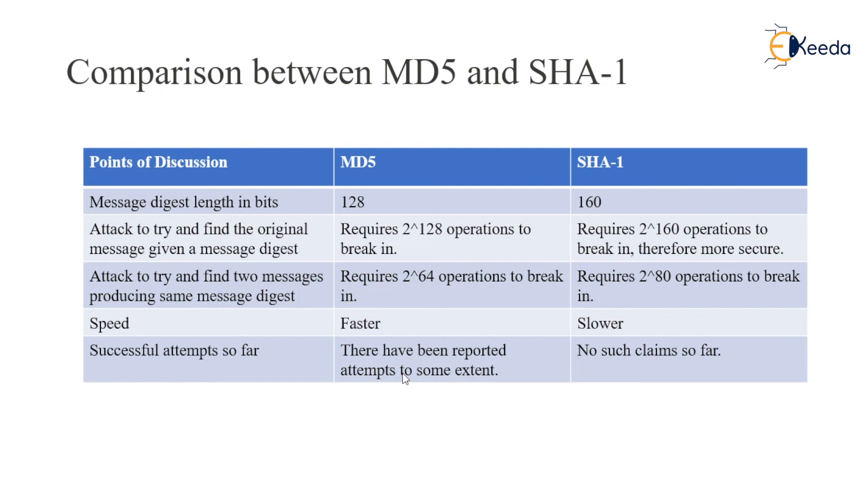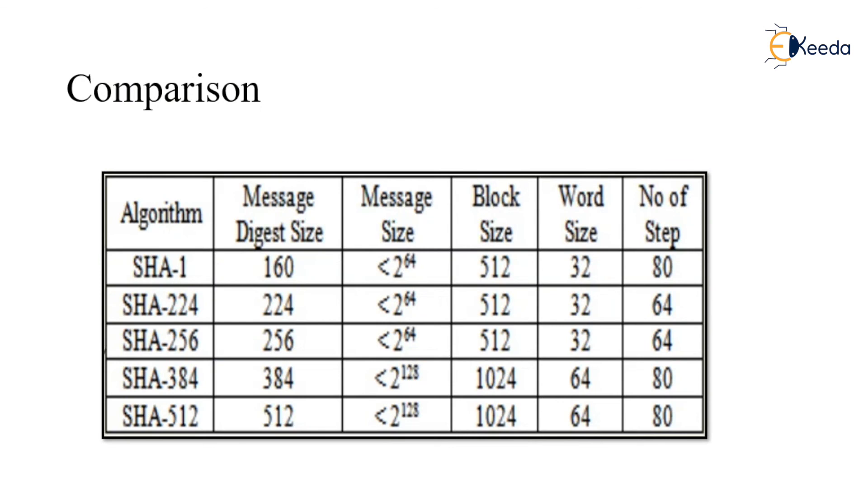According to speed, MD5 is faster and SHA is slower. Successful attempts: there have been reported attempts for MD5 to some extent, no such claims for SHA so far. SHA provides more security than MD5.